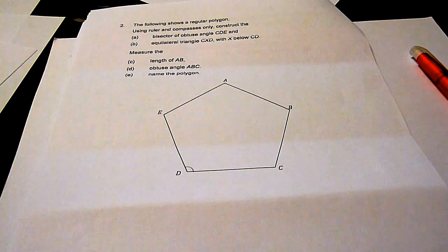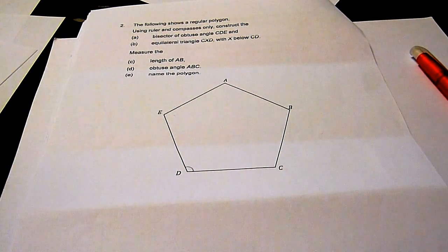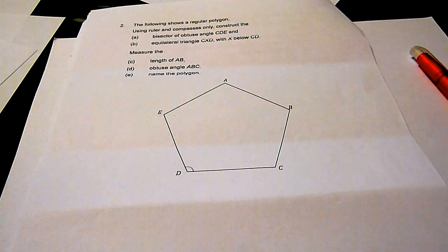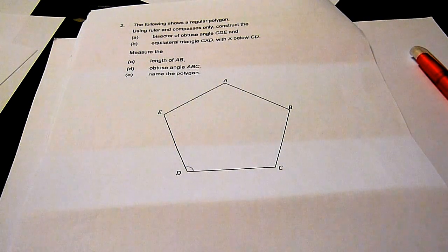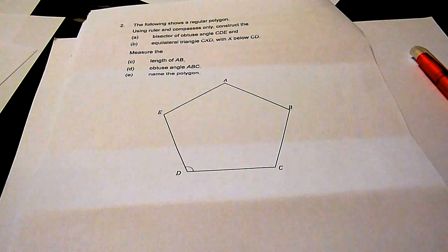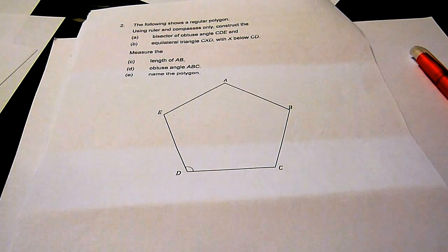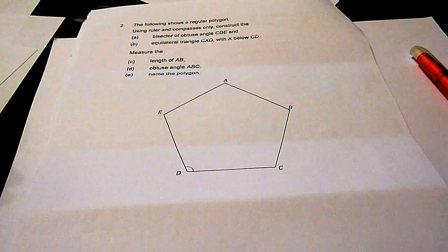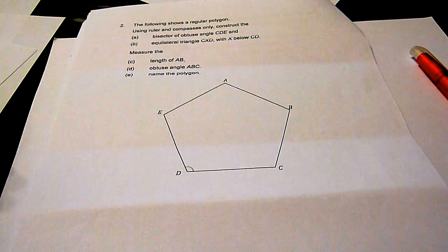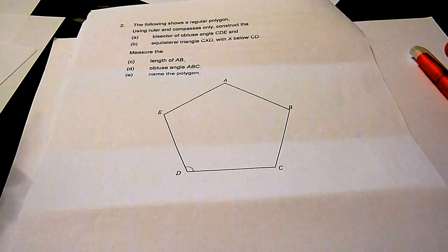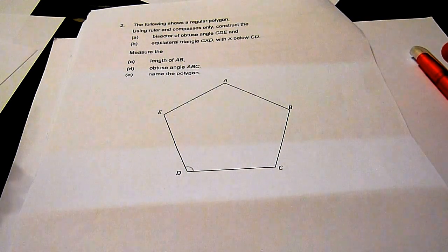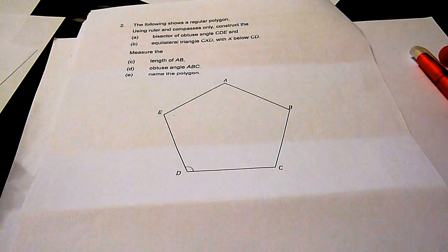In this question, we are given a regular polygon and we are required to use a ruler and compass to construct a bisector of obtuse angle CDE and equilateral triangle CXD with X below CD.